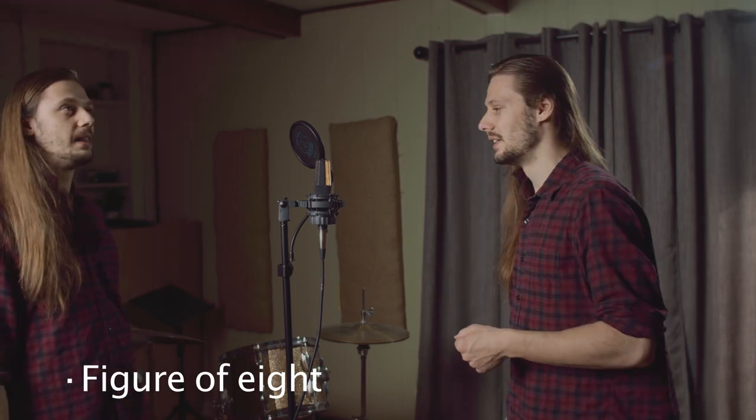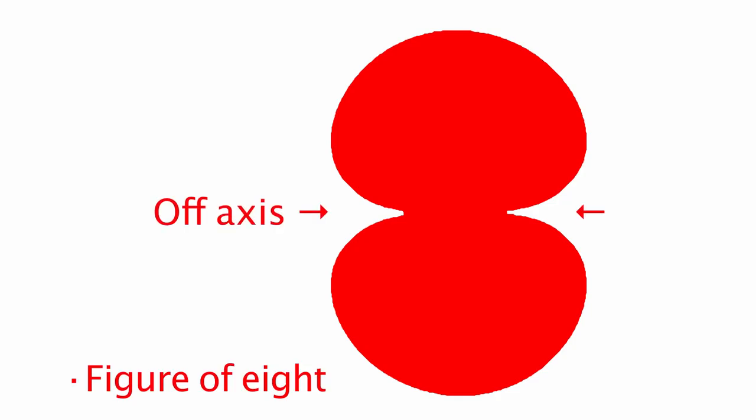The next one is the figure of eight. The figure of eight has a very strong side or off-axis rejection — much stronger than any of the other patterns we discussed so far. Another thing to take into consideration is it has the worst bass response out of all the polar patterns, and you could use that to negate the proximity effect pretty well.